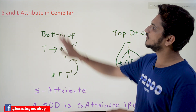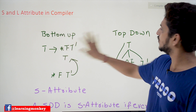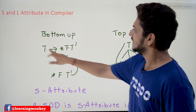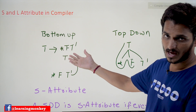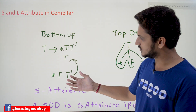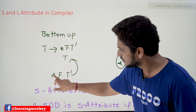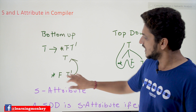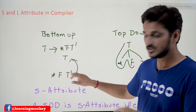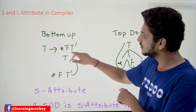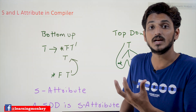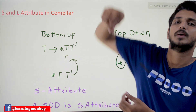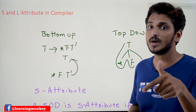Before going into S and L attributes, let's quickly refresh the concepts of bottom-up and top-down evaluation. For the production T → * F T', in the bottom-up approach, we first find *, then F, then T'. After finding these three, they are reduced to T — meaning we identify the children first, and then the children are reduced to the parent. This is how bottom-up evaluates, and these points help in understanding S and L attributes.